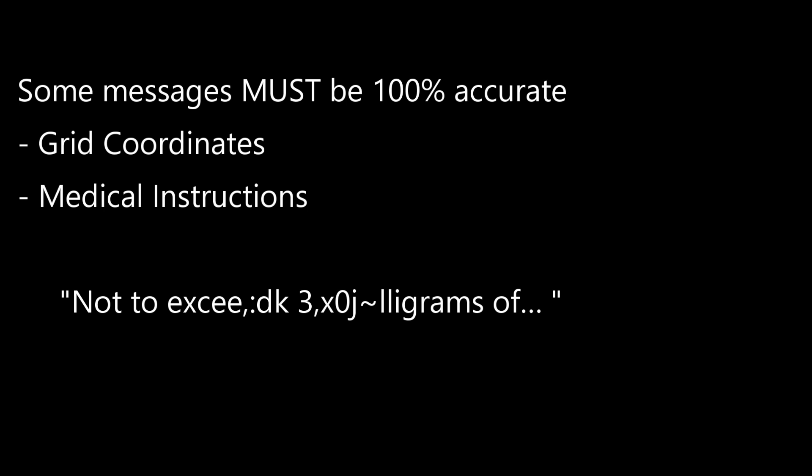But sometimes information must be sent and received with precise accuracy. For example, grid coordinates being relayed to a life flight helicopter mission for a critical condition medevac patient — one digit off could mean miles off, even 100 miles off on a map. Perhaps a doctor's prescription: is that 3 or 30 or 300 or 3000 milligrams of medication? Sometimes message traffic simply has to be 100% accurate.